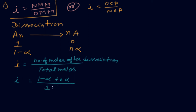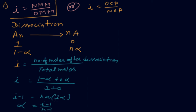For dissociation, i = (1 - α + nα) / 1, which simplifies to i = 1 + α(n - 1). Rearranging gives α = (i - 1) / (n - 1). Here α is the degree of dissociation, which you should know from the Ostwald dilution law studied in chemical equilibrium in Class 11.